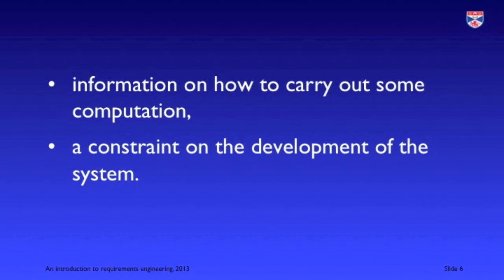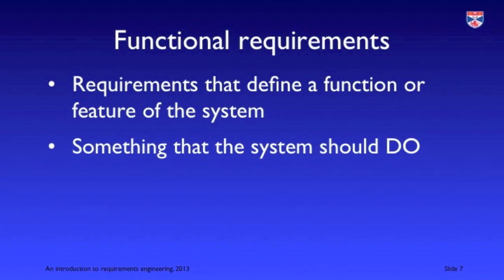There may also be algorithm descriptions — a requirement that a computation has to be carried out in a particular way that must be communicated to the system's engineers — or a constraint on the process, such as that you must use some particular programming language. We normally talk about functional and non-functional requirements, but I'm going to add another kind called a domain requirement.